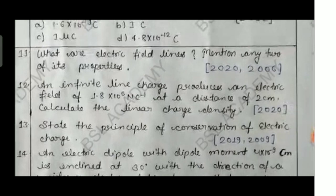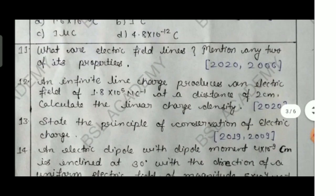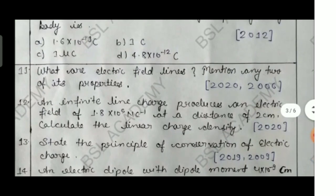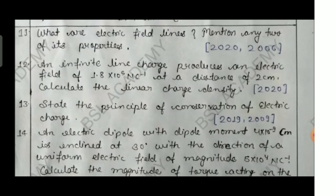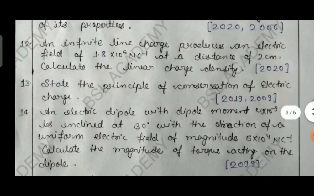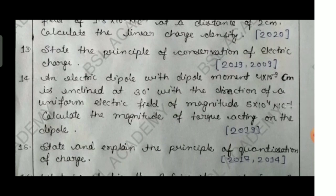Question eleven: what are electric field lines? Mention any two of their properties. This was asked in 2020 and 2006. Question twelve: an infinite line charge produces an electric field of 1.8×10⁵ N/C at a distance of two centimeters. Calculate the linear charge density, lambda, where lambda = q/l. This was asked in 2020. Question thirteen: state the principle of conservation of electric charge, from 2019 and 2009.